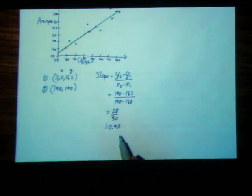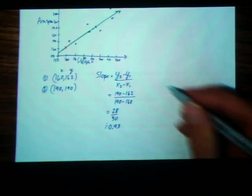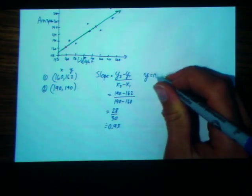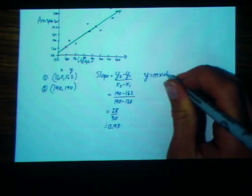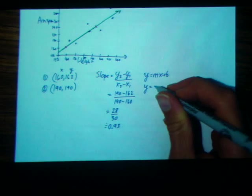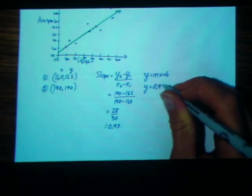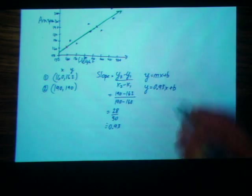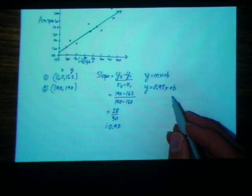Once we've got our slope, our next step is to calculate what the y-intercept is. So we'll start with the equation y equals mx plus b. And we know, from our previous work, what the m or slope is, it's 0.93, approximately. So we'll sub that in, and we've got the rest of our equation, and we want to solve for b.